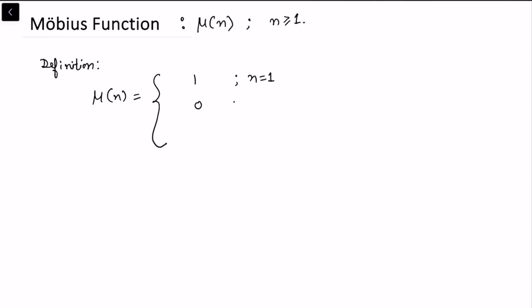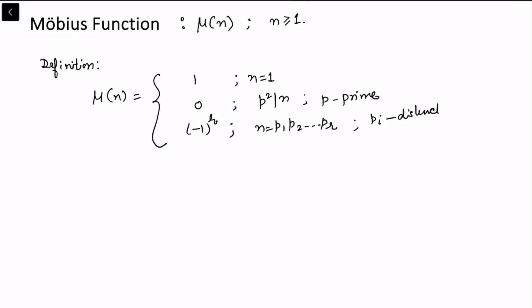It takes the value 0 if n is divisible by some prime square — so whenever p is some prime and p² divides n, the Möbius function value is 0. It takes the value (−1)^r if n can be written as p₁·p₂·...·p_r where the p_i's are distinct primes. Whenever n is not a square-free number, meaning p² divides n, then μ(n) = 0.